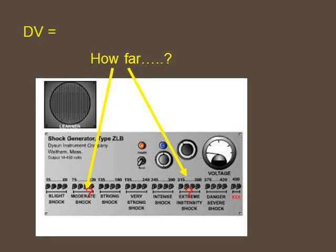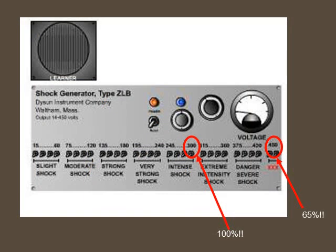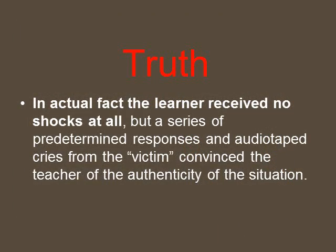The dependent variable Milgram measured was the level of volts the teacher was willing to administer. One hundred percent of participants went at least to 300 volts, and 65% went all the way to 450 volts — the maximum, marked XXX. In actual fact the learner received no shocks at all; the victim's voice was a pre-recorded audio tape, which convinced participants of the authenticity of the situation.